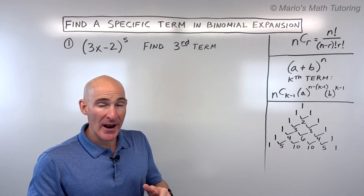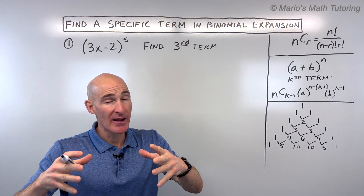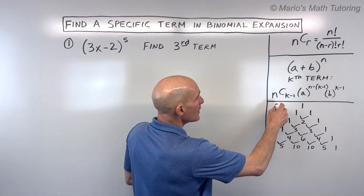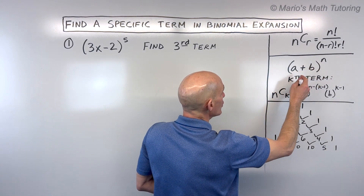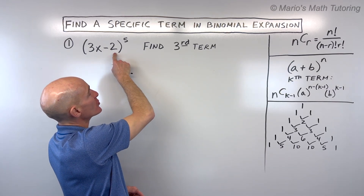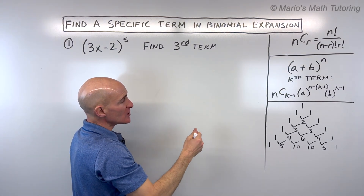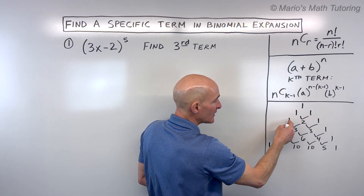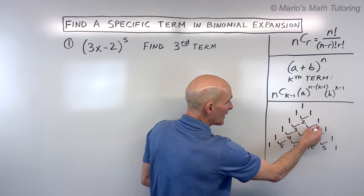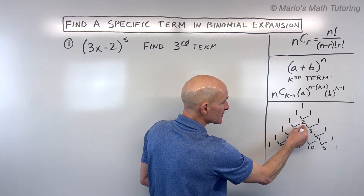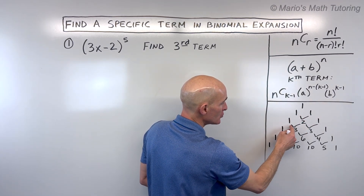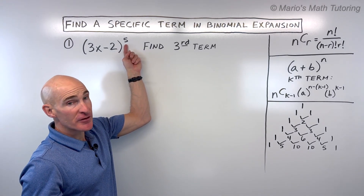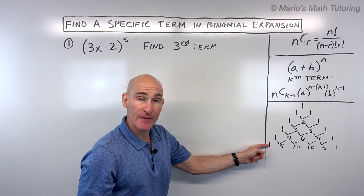We want to zero in on a particular term without doing the entire expansion, but let me show you a pattern. To expand a binomial — meaning two terms — we can use Pascal's triangle. Each row starts with one and ends with one, and you add the two terms above to get the term below. If you're expanding to the fifth power, you go down to the fifth row.